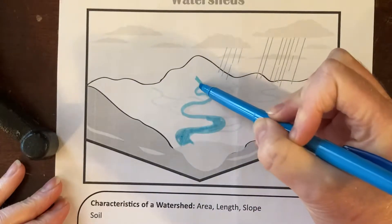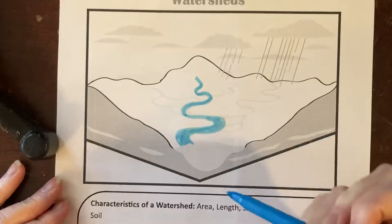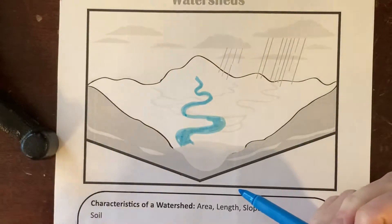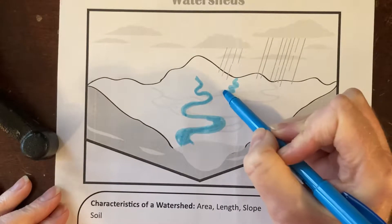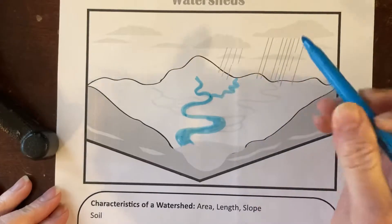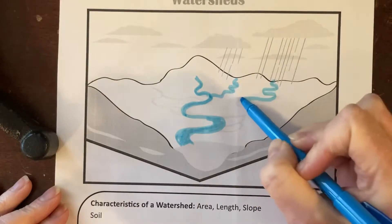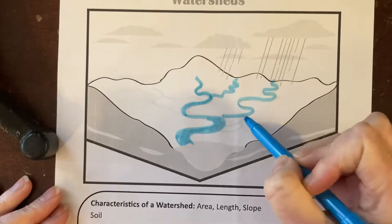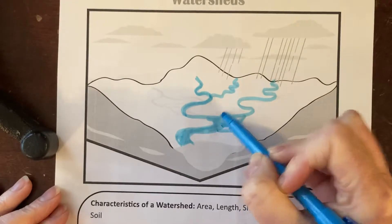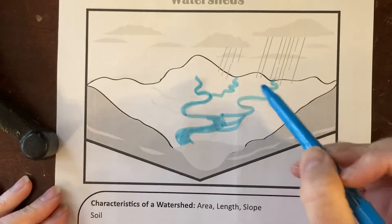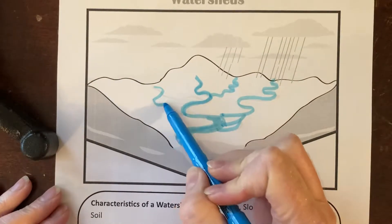This is a picture of a valley or an area — it might be several valleys. These are tributaries, and if you think about this as where we live, you're going to have several tributaries that flow into our main river. Each of these tributaries represents a little valley and canyon.